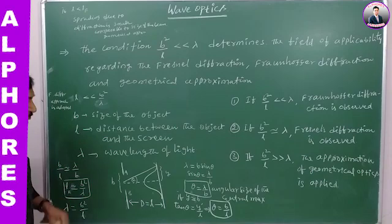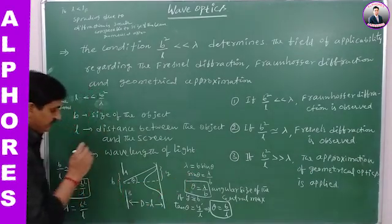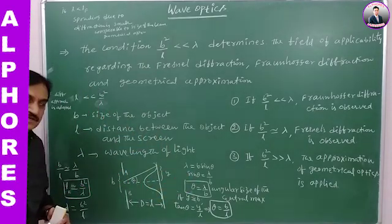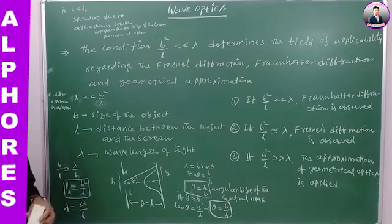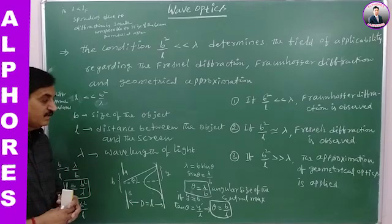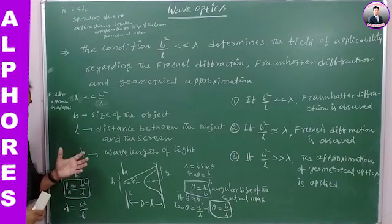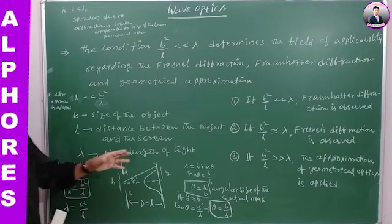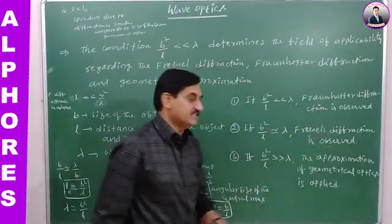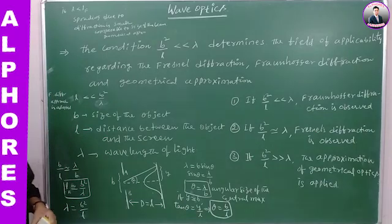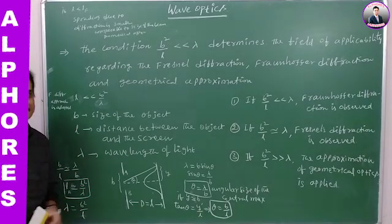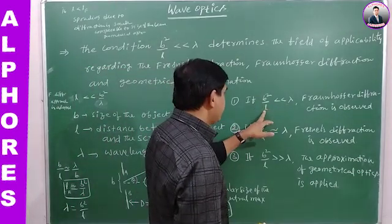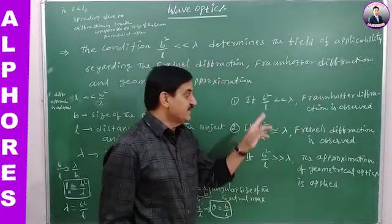Now consider another point. Suppose the screen is at a much greater distance from the object. Then greater spreading takes place, and the diffraction fringes will be observed on the screen more clearly. Therefore, in this case, Fraunhofer diffraction approach is adopted. In terms of the condition, B squared by L much less than lambda — meaning lambda is much greater than the size of the obstacle — the diffraction occurring belongs to the Fraunhofer diffraction class.